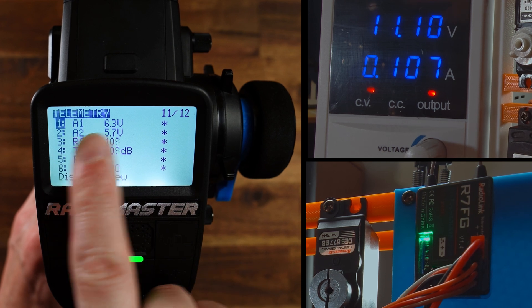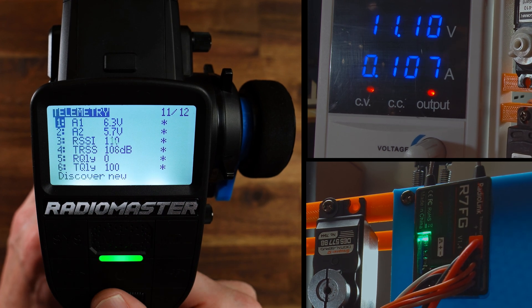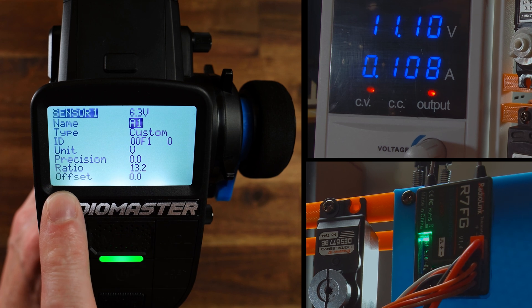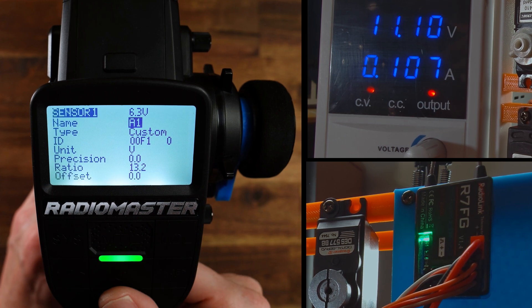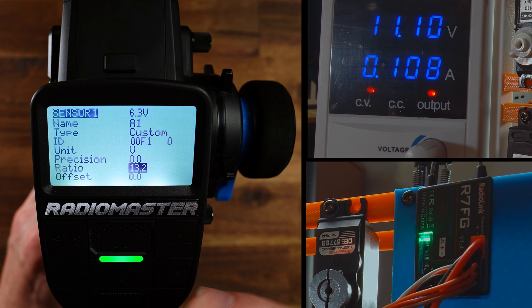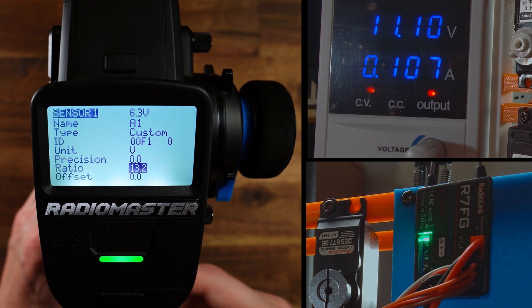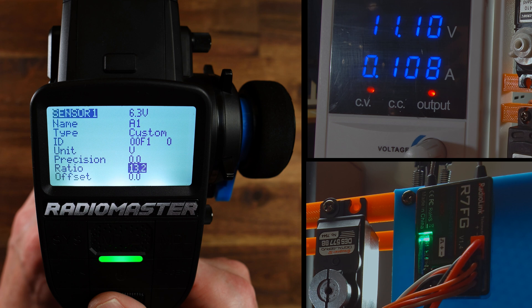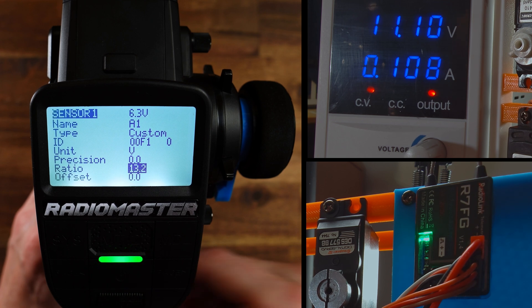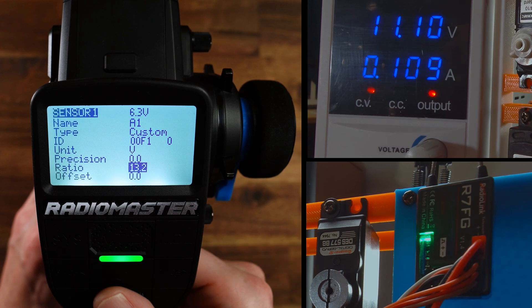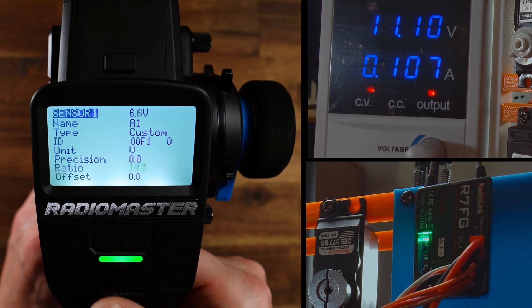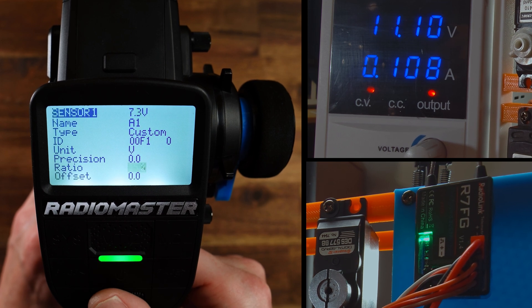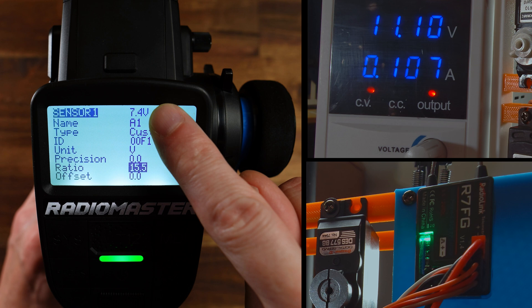If you go to a telemetry sensor here and hit the roller, then you have the two values ratio and offset. And with this you can calibrate the radio to the correct sensor value. In this case this is sensor A, this is our BEC voltage that should be 7.4 volts. Now I turn up the ratio until I have 7.4 volts here.